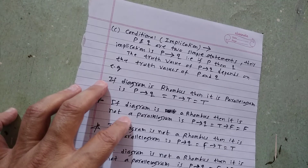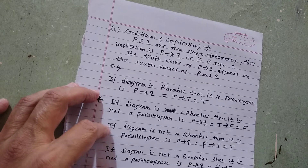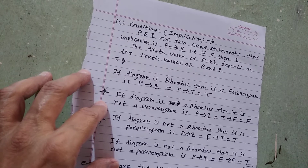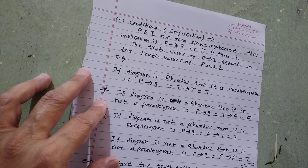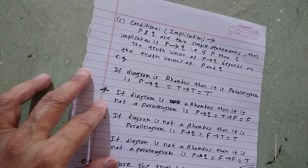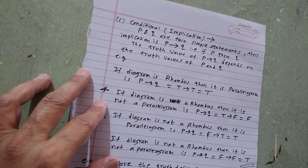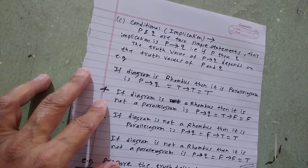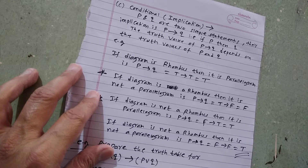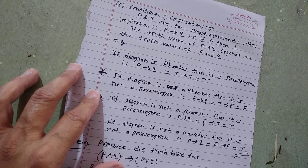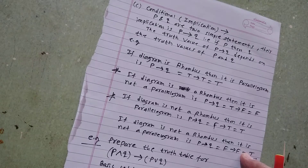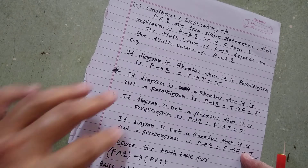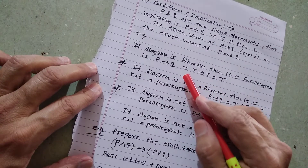Now the important statement is the conditional statement, best understood through an example. P and Q are the two simple statements, and their implication is denoted by P→Q, read as 'P implies Q' or 'if P then Q'. The truth value of P→Q depends on the truth values of P and Q. Example: 'If diagram is a rhombus, then it is a parallelogram.' All rhombuses are parallelograms. Therefore T→T equals T.